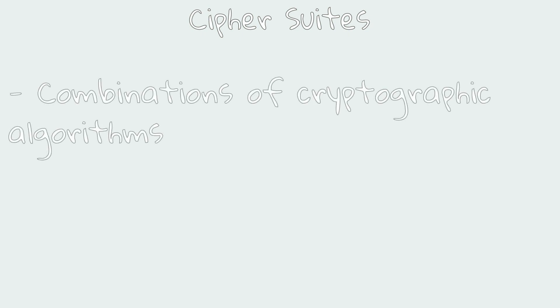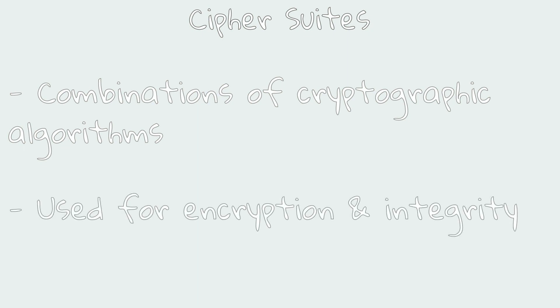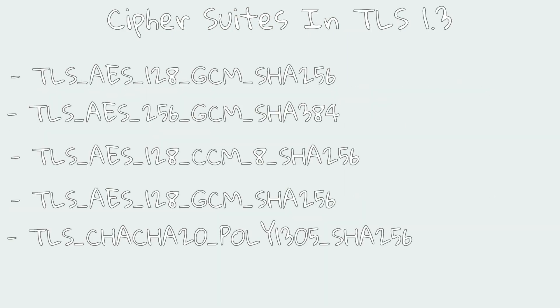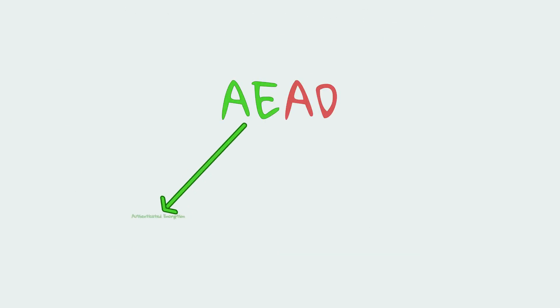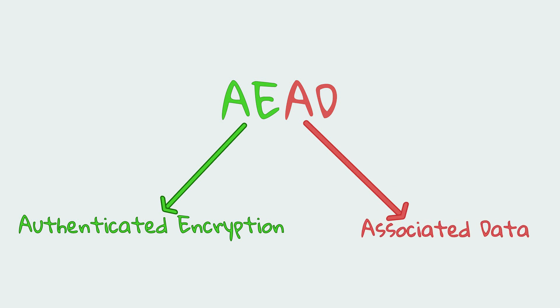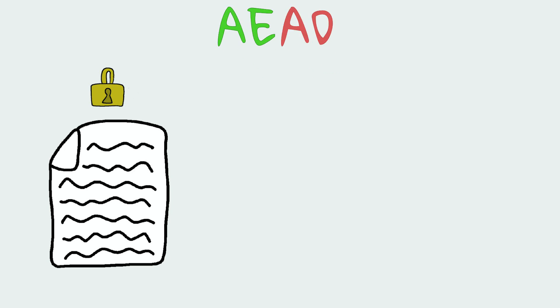Now let's move to cipher suites. These topics will be useful when explaining the TLS handshake. Cipher suites in TLS 1.3 are a combination of algorithms used for encryption and integrity. TLS 1.3 has only five possible cipher suites because it removed all insecure cipher suites from TLS 1.2. In TLS 1.2, separate algorithms were used for encryption and integrity, however in TLS 1.3 all cipher suites use AEAD algorithms. AEAD stands for Authenticated Encryption with Associated Data.